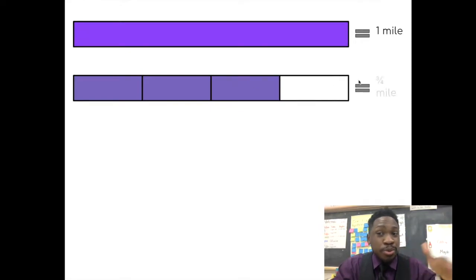If you think about it, like I start here and I run here and I ran one mile. The same thing here, if I start here and I run, I don't run the full mile. I just run three out of the four parts of the mile. So that's three-fourths of a mile.